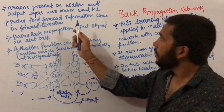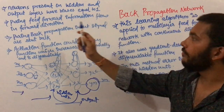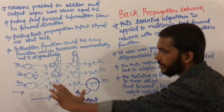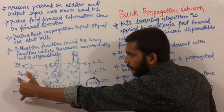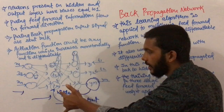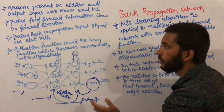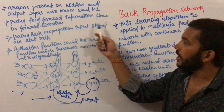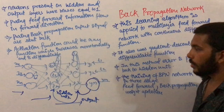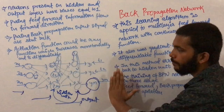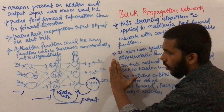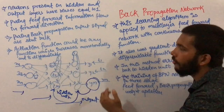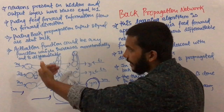During feed forward, information flows in the forward direction — from the input layer to the hidden layer and from the hidden layer to the output layer. During back propagation, input signals are sent back from the calculated error to the output layer, and from the output layer to the hidden layer.